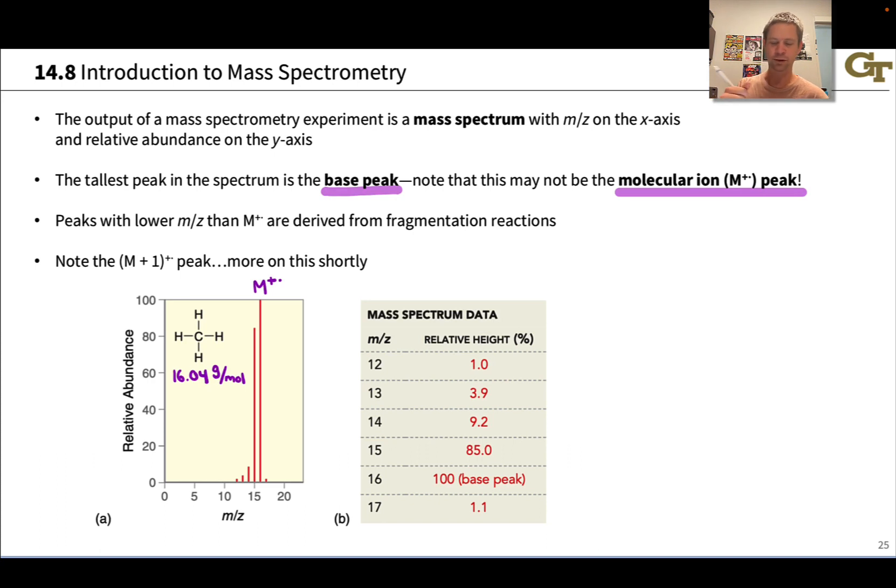On this table we see the relative heights of the different peaks. We'll notice a cluster of peaks around a mass to charge ratio of 16, the molecular ion. There's an M+1 peak which is very tiny but just one unit to the right of the molecular ion peak.